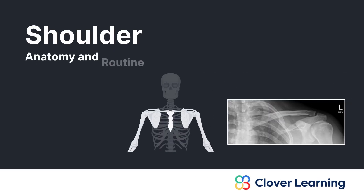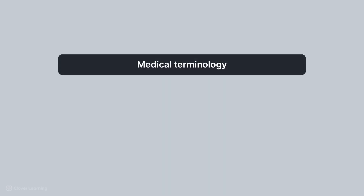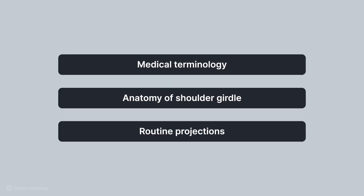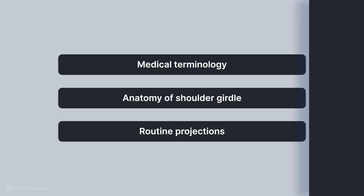Welcome to today's lesson on the gross anatomy and routine radiographic projections of the shoulder girdle. This essential topic forms the foundation for accurate imaging and diagnosis of conditions related to the shoulder girdle. In this lesson, we'll cover appropriate medical terminology, the anatomy of the shoulder girdle, and routine projections for radiographs of the scapula, clavicle, AC joints, and shoulder.